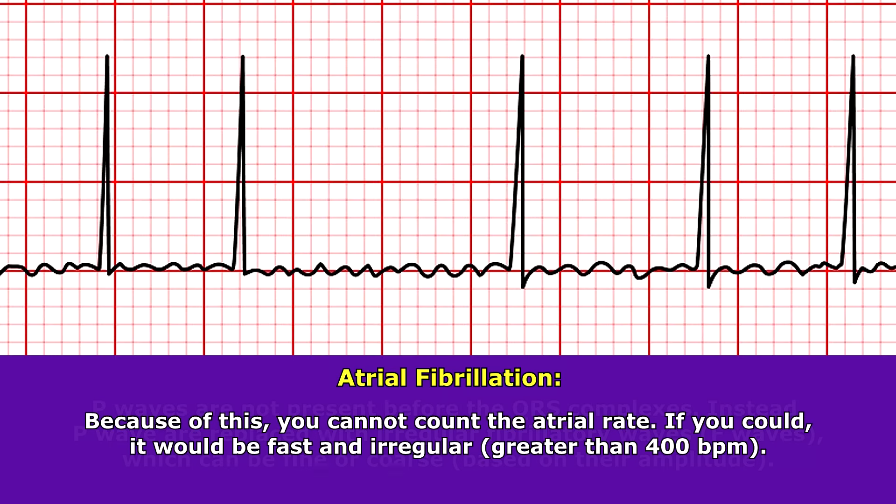Because of this, you can't count the atrial rate. But if you could, the atrial rate would be really fast and irregular — it would be greater than 400 beats per minute.